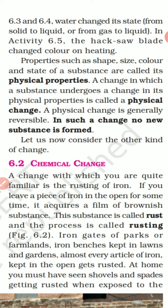Chemical change. What is chemical change? A change in which one or more new substances are formed is called a chemical change. The chemical properties may change or new substances are created. That change is called a chemical change. If you leave a piece of iron in the open for some time, it will acquire a brownish substance. This is called rust, and the process is called rusting.